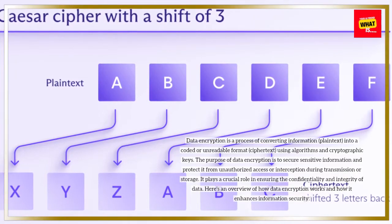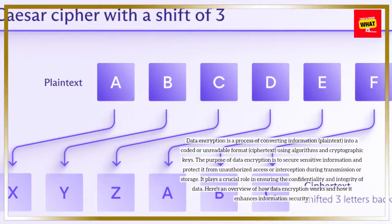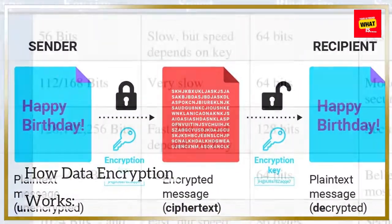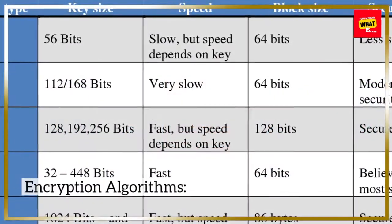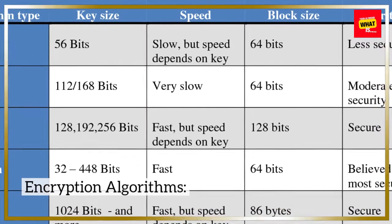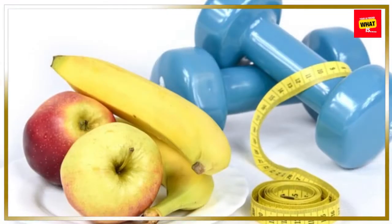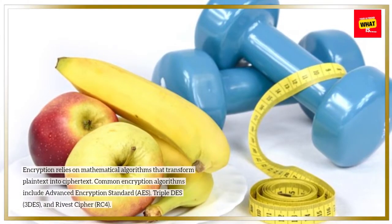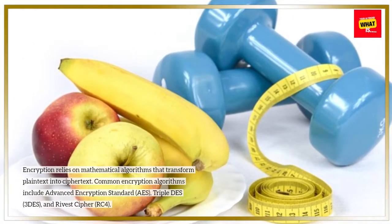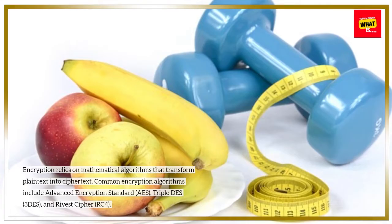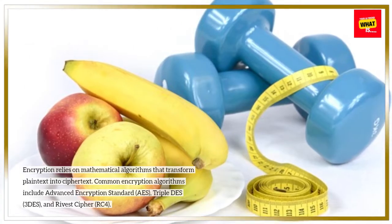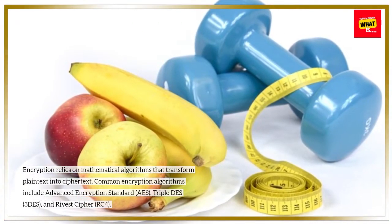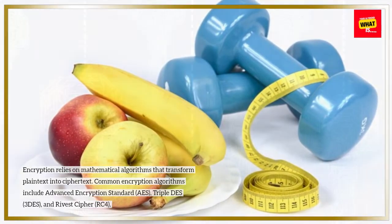Here's an overview of how data encryption works and how it enhances information security. Encryption algorithms: Encryption relies on mathematical algorithms that transform plain text into ciphertext. Common encryption algorithms include Advanced Encryption Standard (AES), Triple DES (3DES), and Rivest Cipher (RC4).